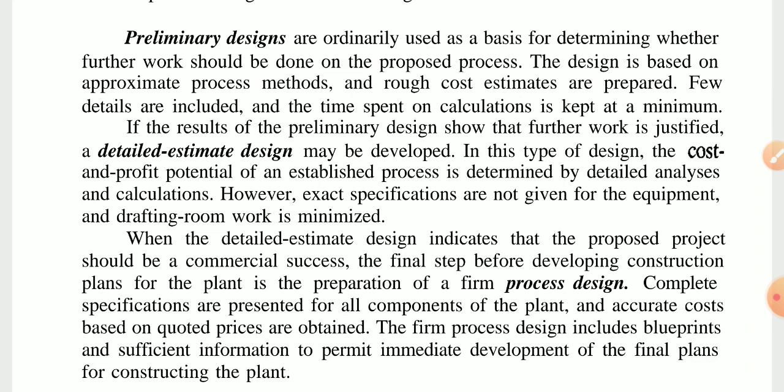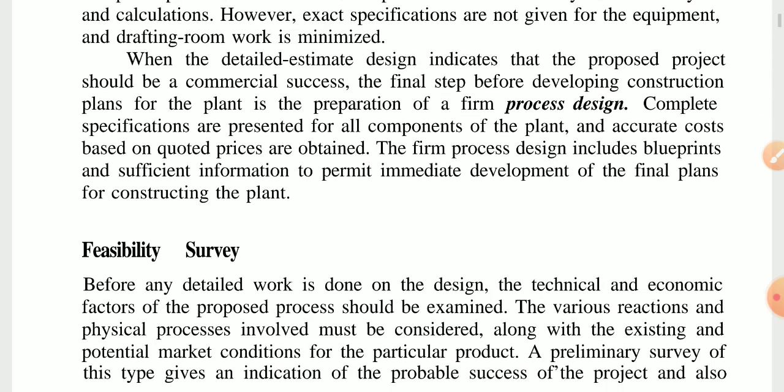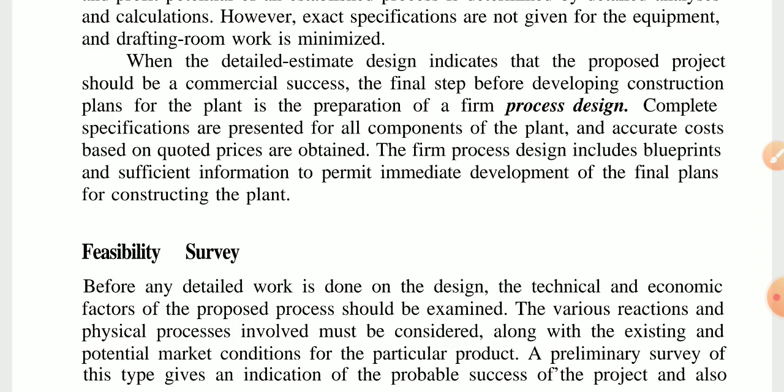A detailed estimate design may be developed where the cost and calculations are carried out. However, exact specifications are not given for the equipment and drafting room work is minimized. When the detail estimate design indicates that the project should proceed, the final step is the preparation of a film process design. Complete specifications are presented for all components of the plant, accurate costs based on quantity prices are obtained, the film process design includes blueprints, and sufficient information to permit immediate development of the final plans for constructing the plant.